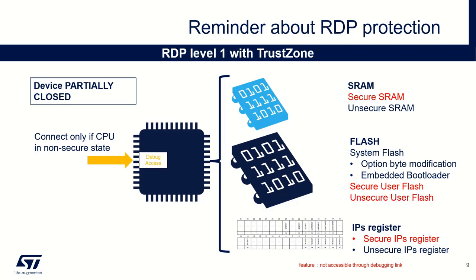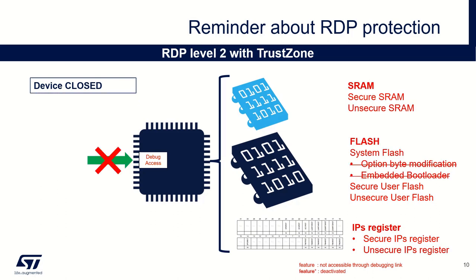RDP level 1 has the same protection as RDP 0.5, but additionally the non-secure flash access is not possible. That means all the flash content is protected, both the secure and the non-secure parts. RDP level 2: the device is closed, debugging link is deactivated. Additionally, option byte modification is no more possible even from the embedded firmware, and you can't activate the embedded bootloader anymore.